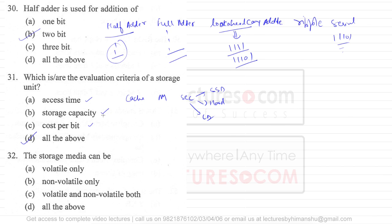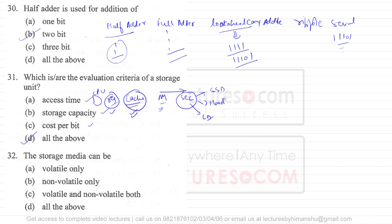All of the above are the evaluation criteria for the storage unit. If we look at the hierarchy: CPU, then registers, then cache memory, then main memory. Cache memory and registers are very small and the cost per bit is very high. As you go to secondary storage, the size is bigger and the cost per bit is lower.